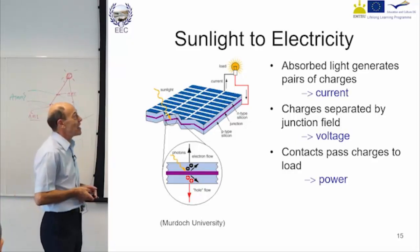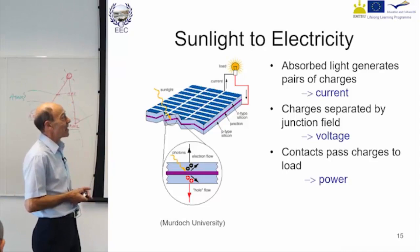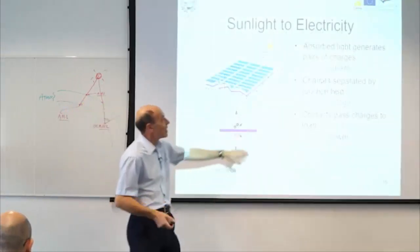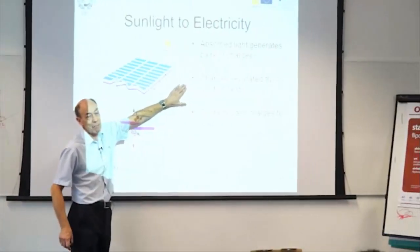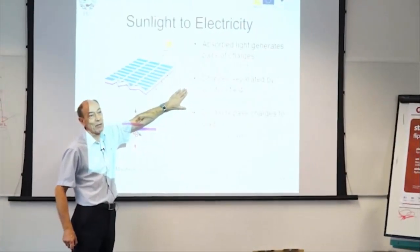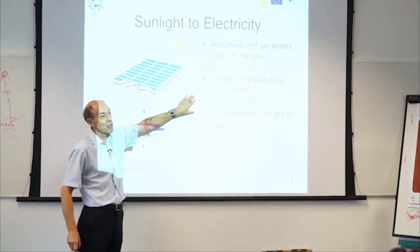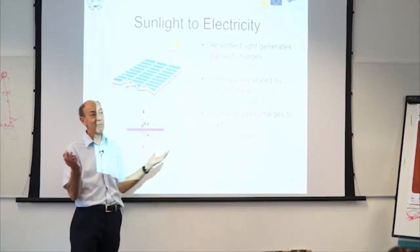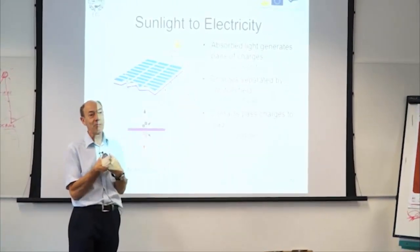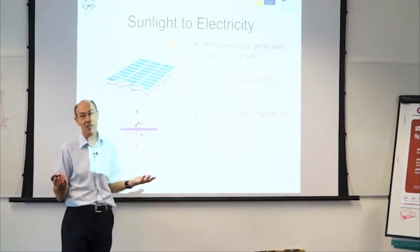The secret to having a photovoltaic effect is that you separate those charges by a built-in electrical field. If you don't separate the charges, they rapidly meet each other, recombine, and you're back to where you started.